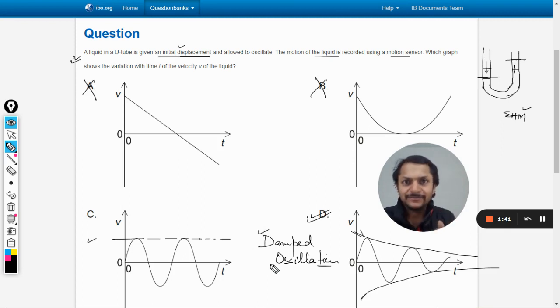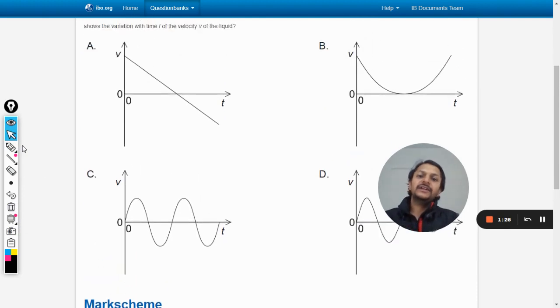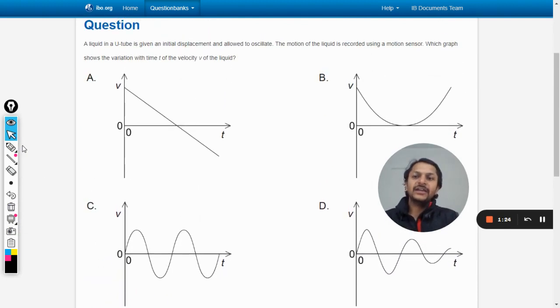And these are known as undamped oscillations, technically. Okay, so my dear students, let us verify our answer, whether it is C or D, from the mark scheme. Well, the answer given is D. So, as I have told you, IB always talks in terms of the real world in these kinds of questions.